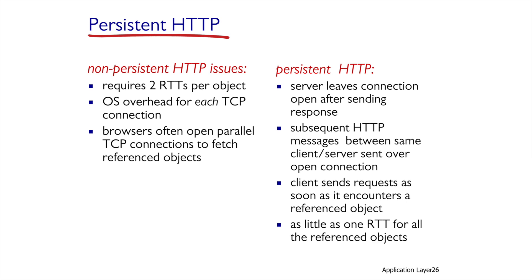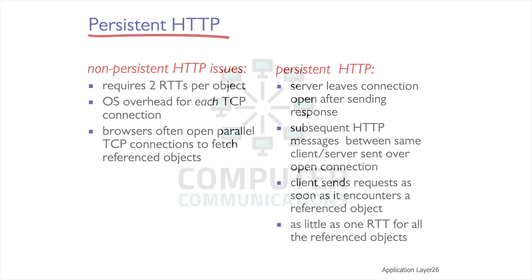When the connection is open, the client can request a number of objects even with gaps in request times, because the connection is maintained. In this unit, we learned about two types of HTTP — HTTP persistent and HTTP non-persistent — and noted the differences between the methods and the differences in reaction times.